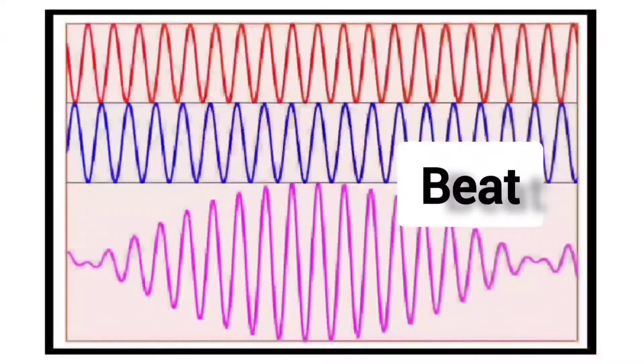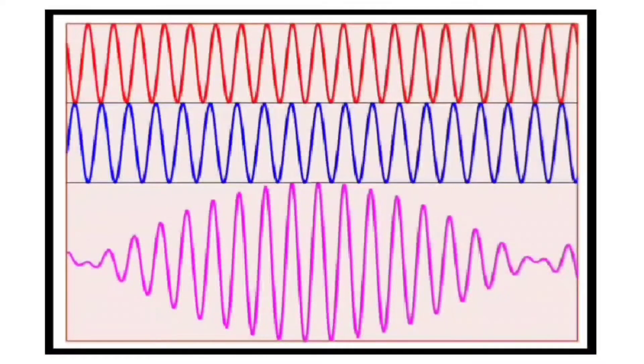The first concept that I am going to discuss is Beat. Beat is the pulsation caused by the combination of two waves of slightly different frequencies. It can be perceived as a periodic variation in amplitude.